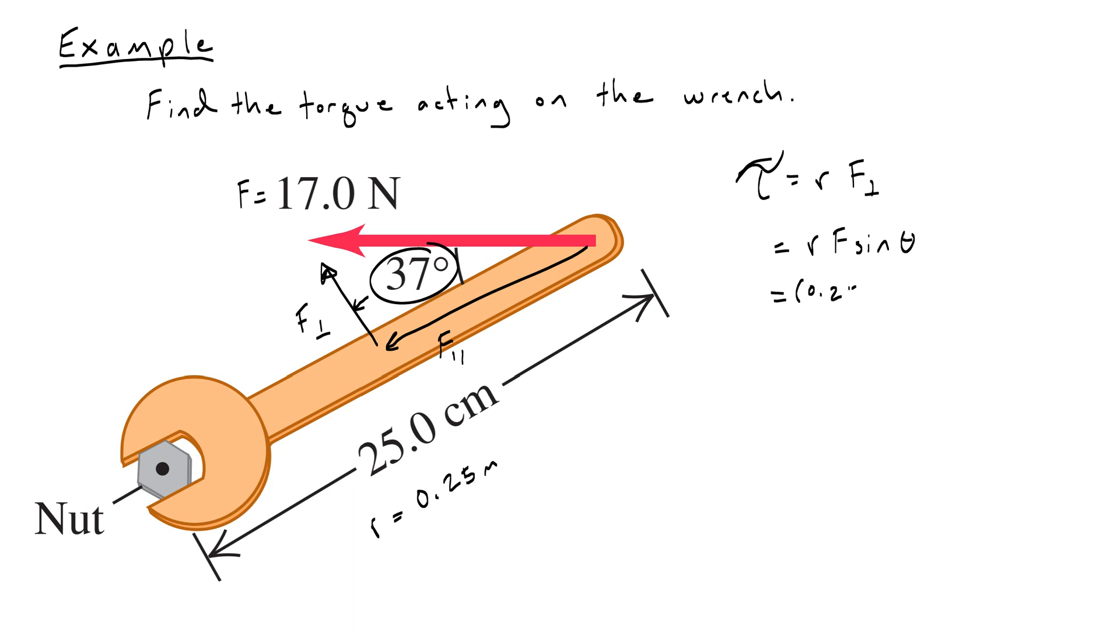At that point, you just plug in your numbers: 0.25 meters times 17 newtons times sine of 37 degrees, which should give you 2.557. So let's say 2.56 newtons times meters.